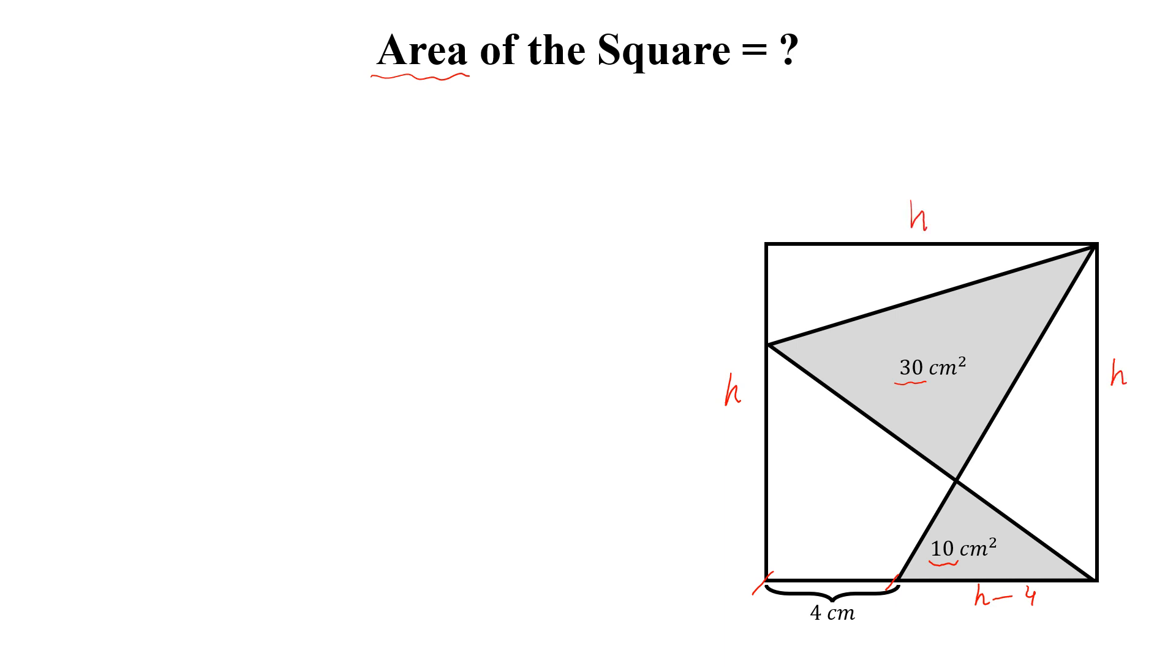Now look at this red triangle. The height of this red triangle is also h. Let this area be A. Then the area of this red triangle will be equal to half of h into h equal to 30 plus A.